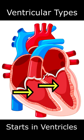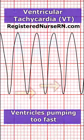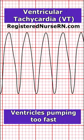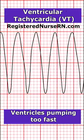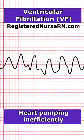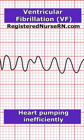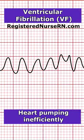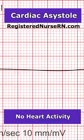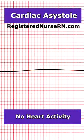Then we have the ventricular types, and these can definitely be life-threatening. The electrical signal begins in the lower chamber of the heart, the ventricle. Here we have ventricular tachycardia — our ventricles are just pumping way too fast. And then we have ventricular fibrillation, where the heart's not pumping efficiently at all, and it can lead to cardiac asystole, where there is no heart activity at all.